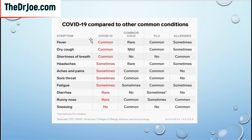We have four disease conditions here: COVID-19, common cold, flu, and allergies. But I think we'll probably ignore allergies and common cold — the two that concern us more are the flu and COVID-19.